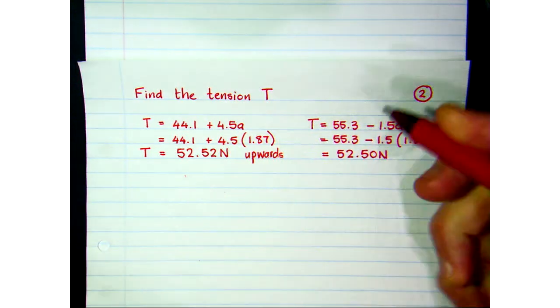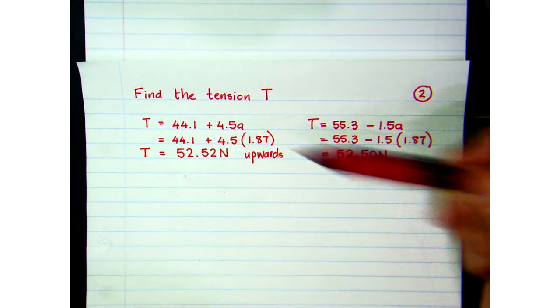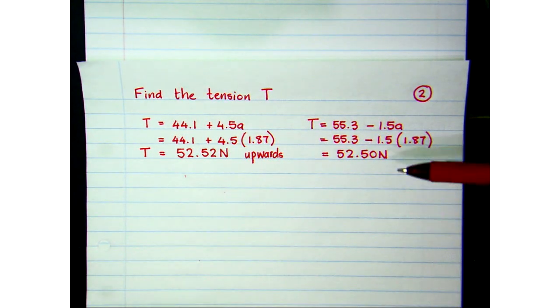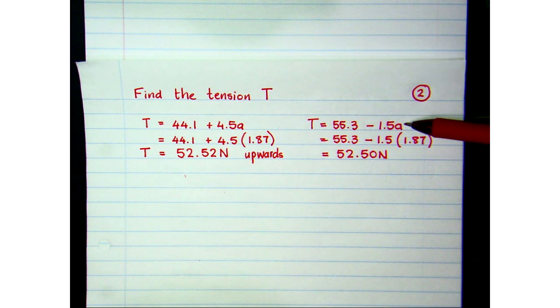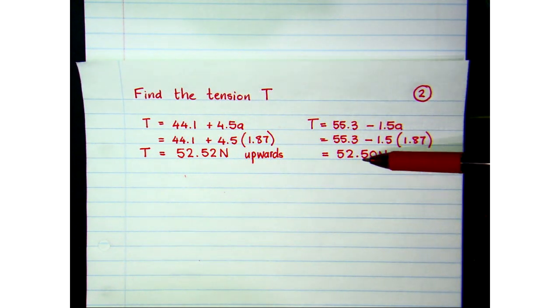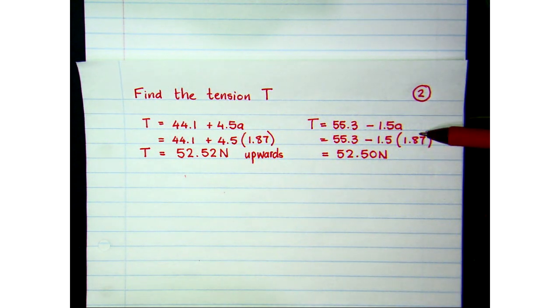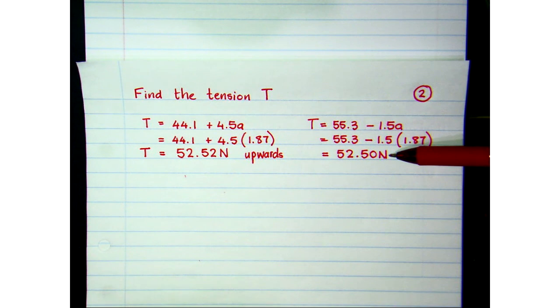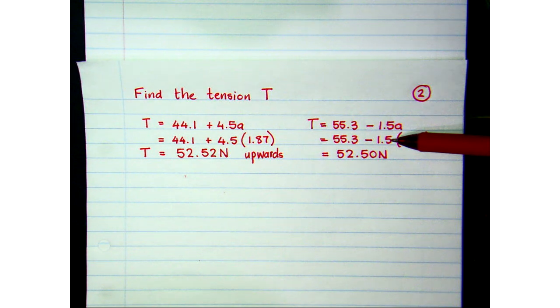So that's upwards on the 4.5 kg block, but if we use the other one, we'd still get the same answer. That's it's slightly different. That's because we've rounded off as we've gone along here. We rounded off that acceleration value, but they're very close in terms of the two answers, and this would be the tension acting on the 1.5 and that would have been downwards.